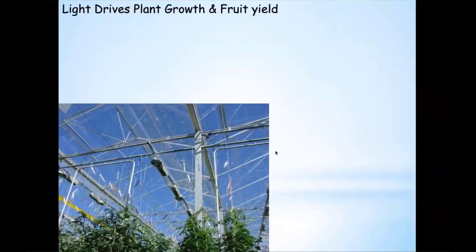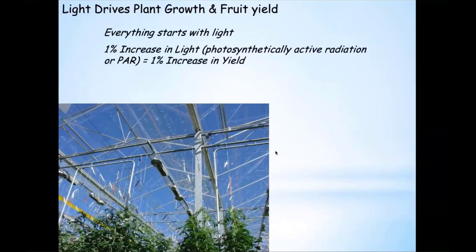Let me get into the main talk. When we talk about production, everything begins with light — light is going to drive the growth and the photosynthetic capacity of the crop. There's a rule of thumb we use, and it applies primarily during the light-limited months of the year: a 1% increase in photosynthetically active radiation equals a 1% increase in yield potential.